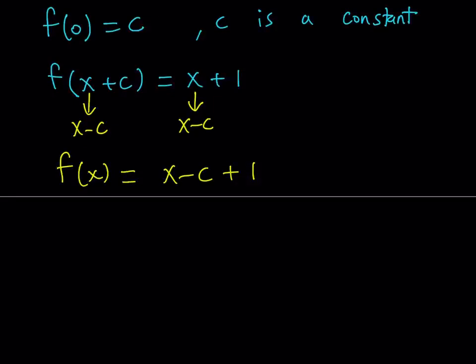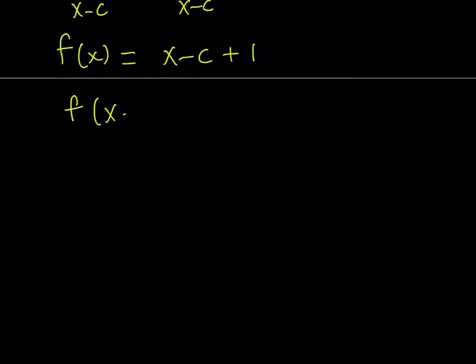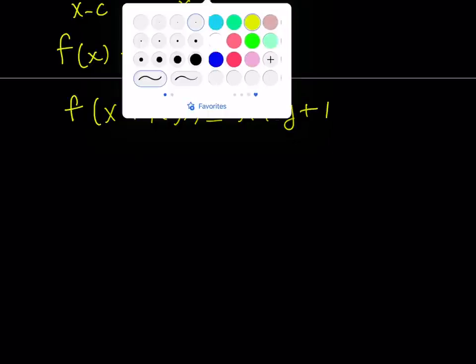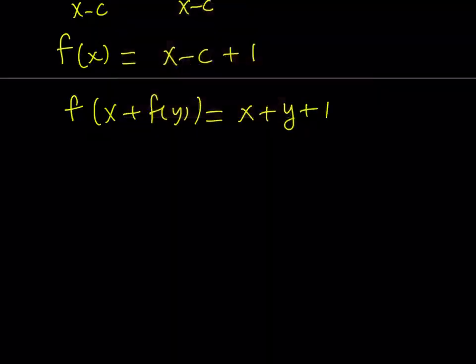Great. Now, we've got an expression for f of x. So we can just go ahead and substitute this into the original problem. What is our original equation? It is f of x plus f of y equals x plus y plus 1. I'm going to show you an alternative method to get to the answer after this. So let's go ahead and do this way first.